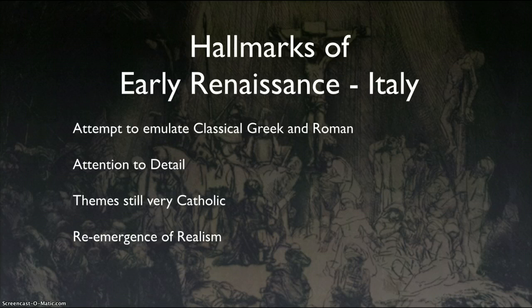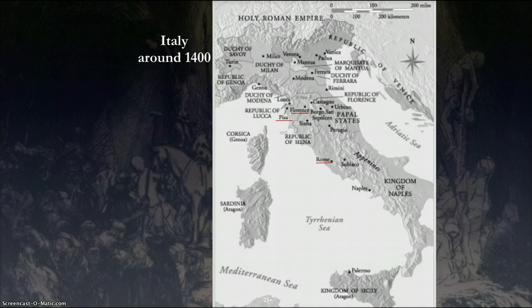First, let's look at a map — it's a bit pixelated, sorry. Here's Rome. Florence is up here. Here's Pisa, which we've already seen work from. Milan is in the north, which is more Germanic and French. And Venice is up here.